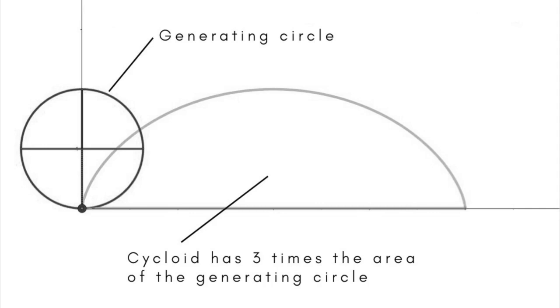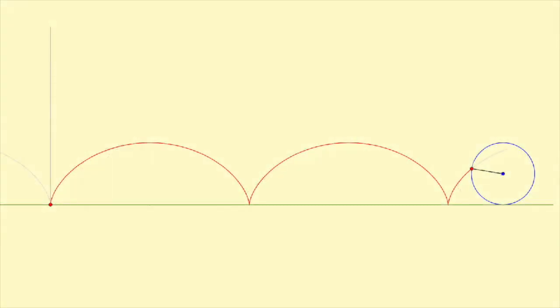In 1658, the English architect Christopher Wren showed that the length of a cycloid is four times the diameter of the generating circle.